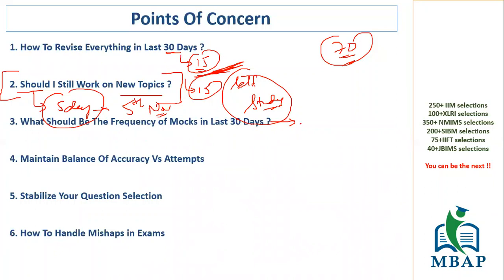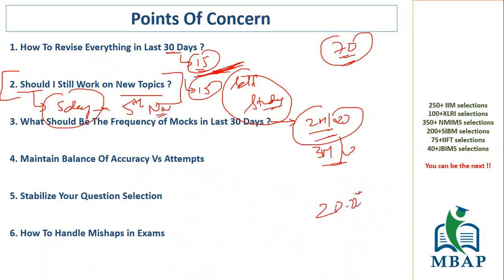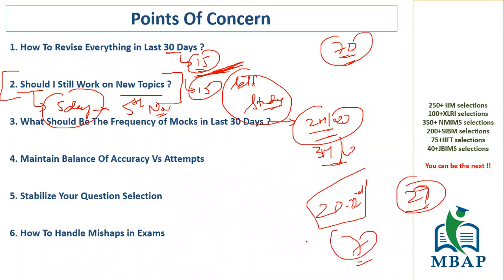What should be the frequency of mocks in the last 30 days? Two mocks a week is what I have already suggested to all my students. If you want to give more, three mocks a week is also fine. The last mock you should give should be around 20th to 22nd of November — not after 22nd, because 29th is your exam. Preferably give your last mock by 22nd of November.